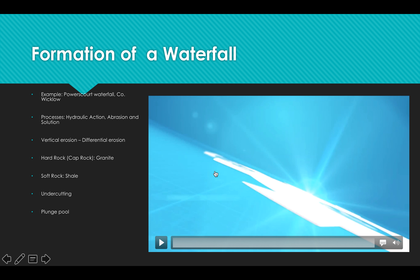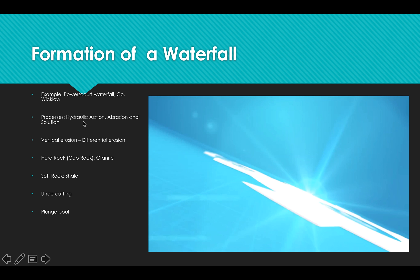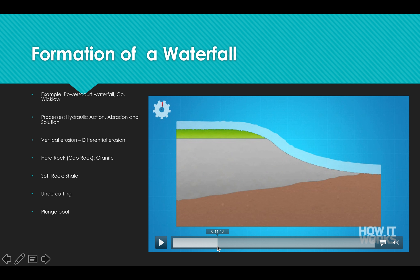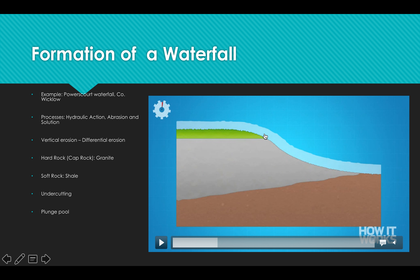So the three methods of erosion for a waterfall are hydraulic action, abrasion, and solution. The example we'll use is the Powerscourt waterfall in County Wicklow — that's all you need to say about that. In this waterfall, vertical erosion takes place, where the river is cutting down into the bed as it flows down a slope.